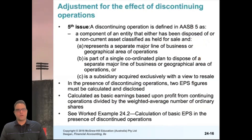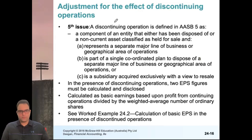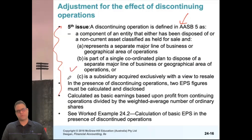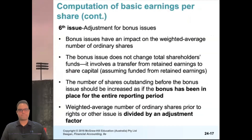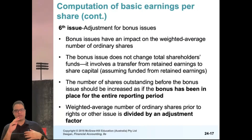A fifth adjustment relates to discontinued operations. If a subsidiary discontinues operations, its contribution should be excluded from the EPS calculation. There is a small example in the textbook at example 24.2. The next important topic is bonus shares, which require two to three slides of explanation.